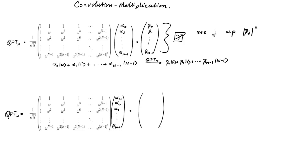What do you expect to see on the output side? The first entry is easy — you'd still see beta-naught. The next entry, instead of beta-1, is shifted by omega, so you see omega times beta-1. Similarly, the next entry is not beta-2, but omega-squared times beta-2.